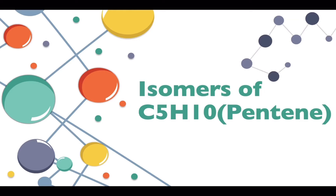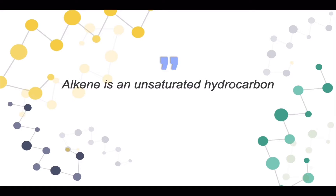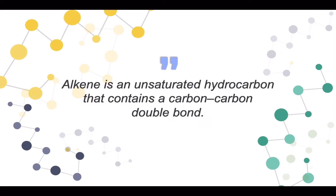Assalamualaikum warahmatullahi wabarakatuh. Welcome back, guys. Right now I'm going to tell you about the isomers of C5H10, also known as pentene. But first of all, I'm going to tell you what alkene is. Alkene is an unsaturated hydrocarbon that contains a carbon-carbon double bond. If the previous one we talked about was alkane — which has a single bond — right now alkene has a double bond.